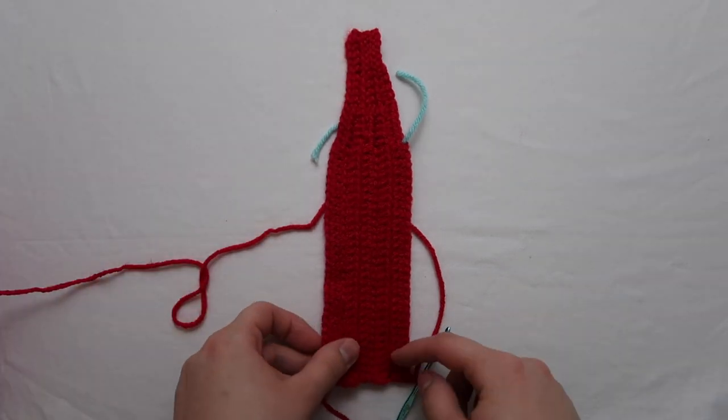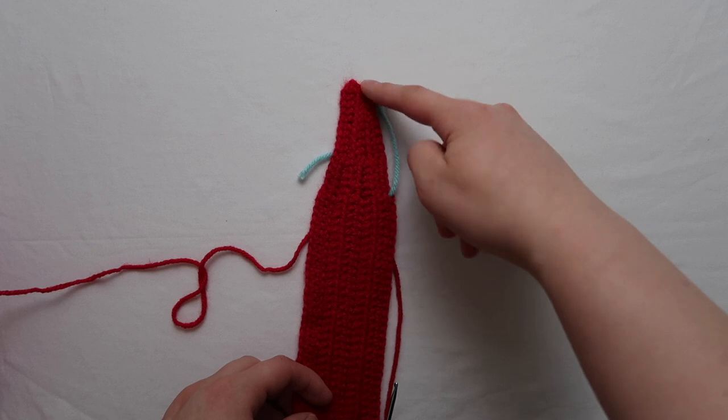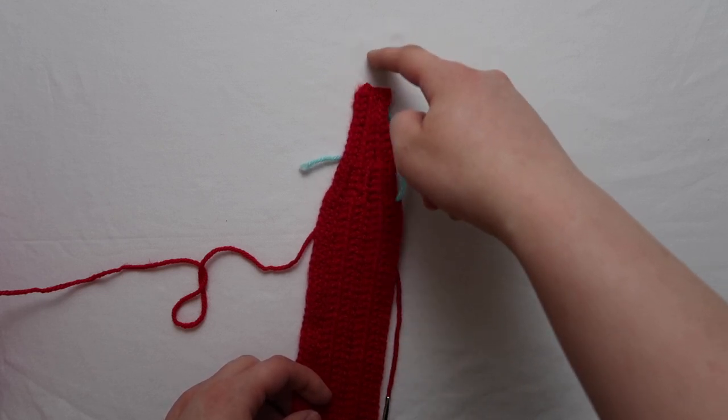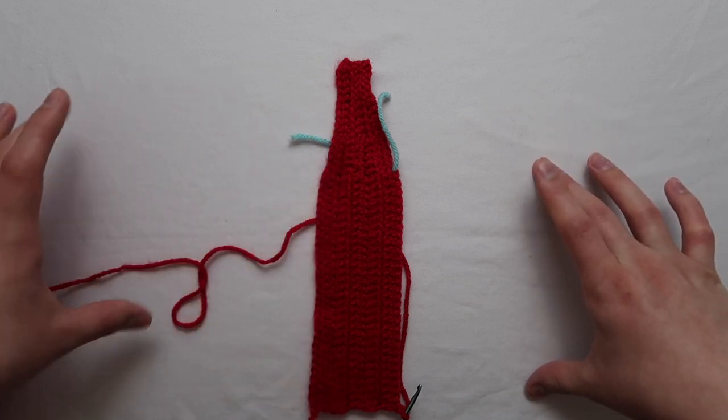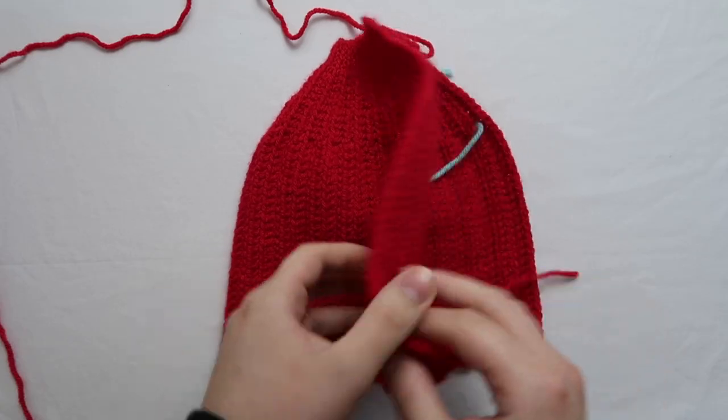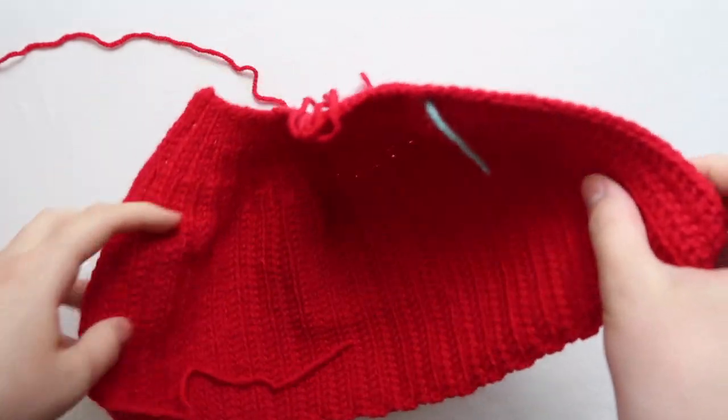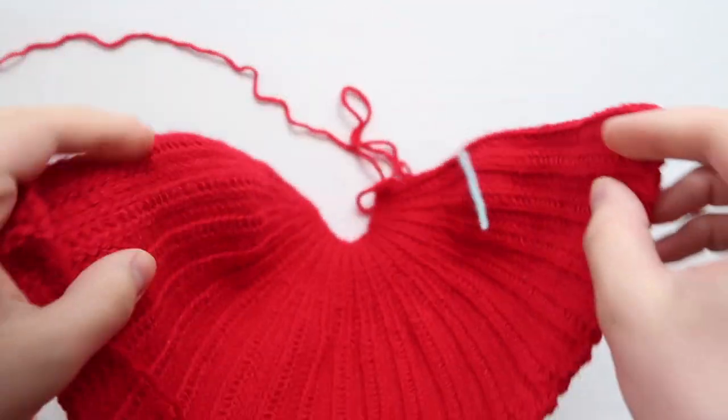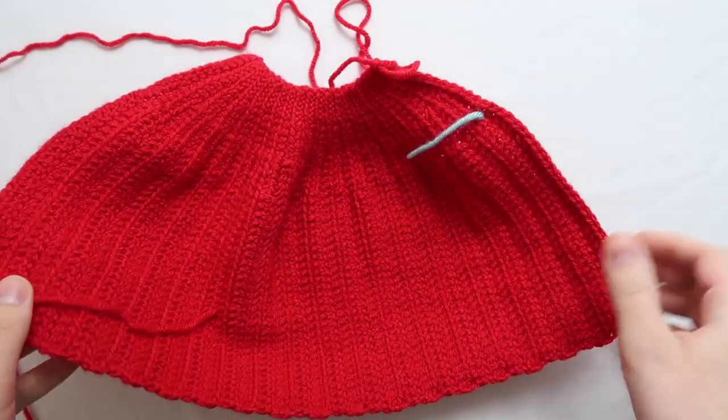After a while it'll start looking a bit like a coke bottle and the top will start slowly curving inwards, which is what you want. This is what the hat looks like once it's around three fourths done. You can see that it's very curved now towards the top of the hat as it should be, but obviously it wasn't big enough yet so I kept going.